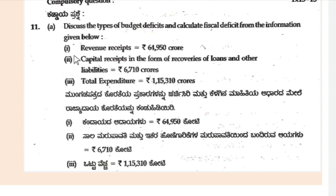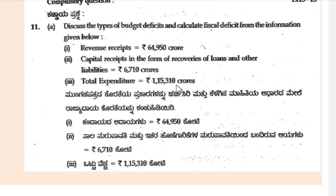The information is as follows. Number 1: Revenue Receipts — Rs. 64,950 Crores. Second: Capital Receipts in the form of recoveries of loans and other liabilities — Rs. 6,710 Crores. And third: Total Expenditure.